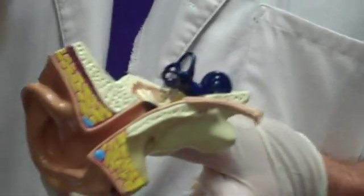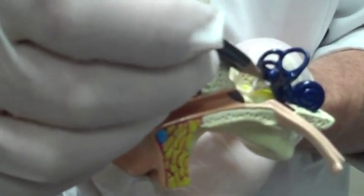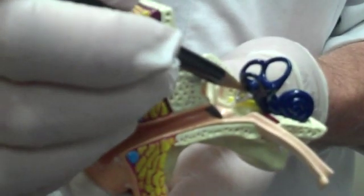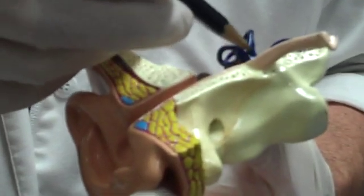Vestibular oval window. It doesn't show it really clearly, but it's right here where the stapes attaches. And this gray thing is the stapes, so right there where it attaches. The vestibule is this part here, this big kind of open area.